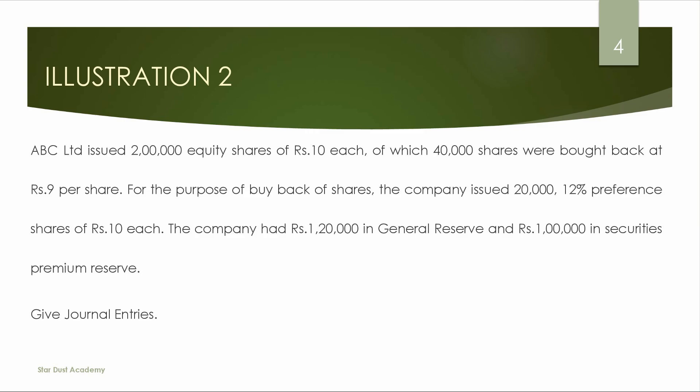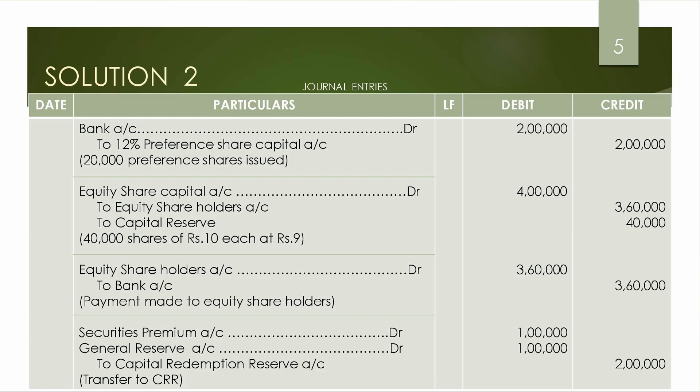We create the capital redemption reserve. The first entry is for the preference share issue: Bank account Dr to 12% Preference Share Capital account. We are issuing 20,000 preference shares of Rs. 10 each, so the amount is 2,00,000. Next, for the buyback: Equity Share Capital account Dr to Equity Shareholders account — 40,000 shares at face value of Rs. 10 gives 4,00,000.